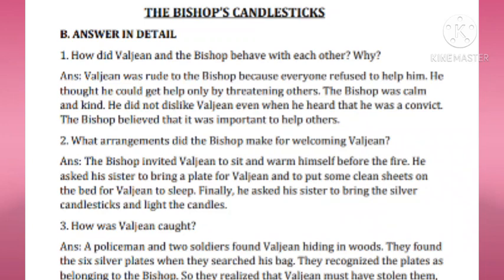The third question: How was Jean Valjean caught? After Jean Valjean stole the plates, he ran away and hid in the woods. A policeman and two soldiers saw him hiding in the woods. While searching his bag, they found the six silver plates. They recognized the plates as belonging to the Bishop, and understood that Jean Valjean must have stolen them.